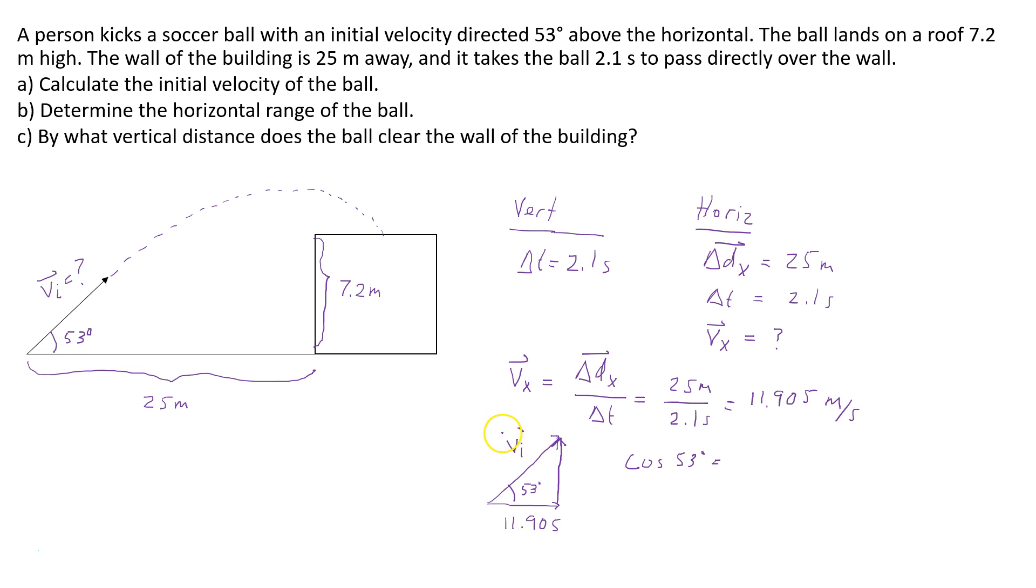The adjacent is 11.905. The hypotenuse we don't know, we're looking for it. It's the initial velocity. Rearranging this, the initial velocity equals 11.905 divided by cosine 53. And that's going to give us 19.8 meters per second.